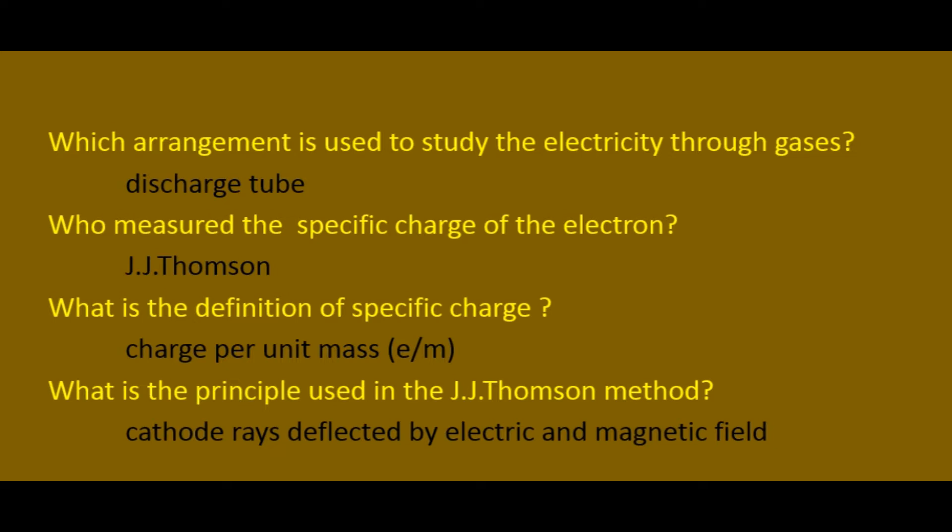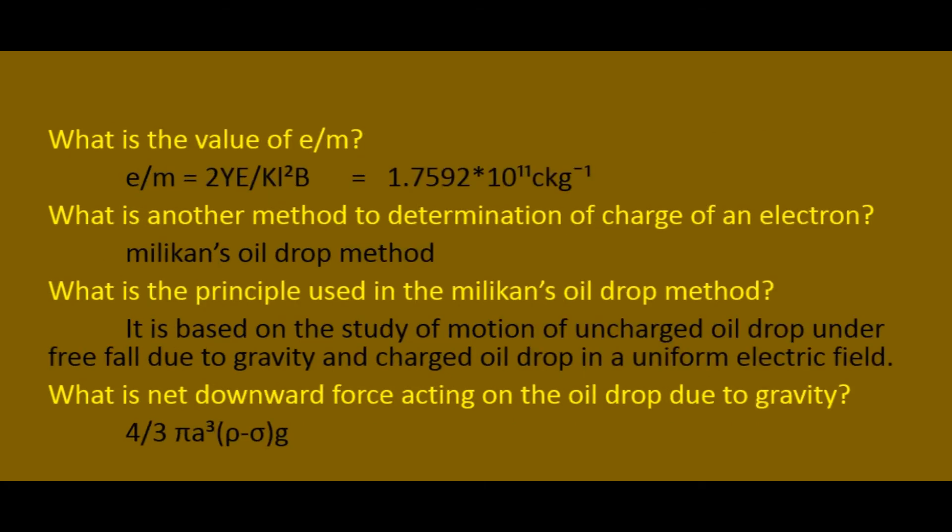The specific charge is e by m. What is the principle used in the JJ Thomson method? JJ Thomson determined the value of the specific charge of an electron. The principle is that the cathode ray is deflected by electric and magnetic fields.